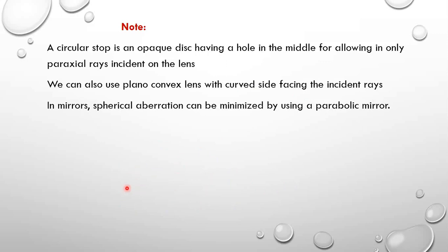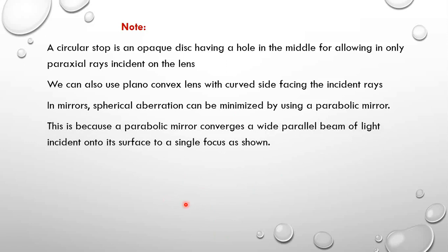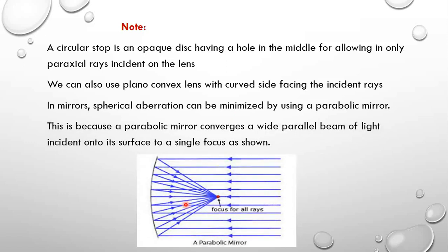Parabolic mirrors converge a wide parallel beam of light incident on them to a single focus. Because of this, all the marginal rays are also converged to a single focus, which is why parabolic mirrors can be used to minimize spherical aberration in converging mirrors.